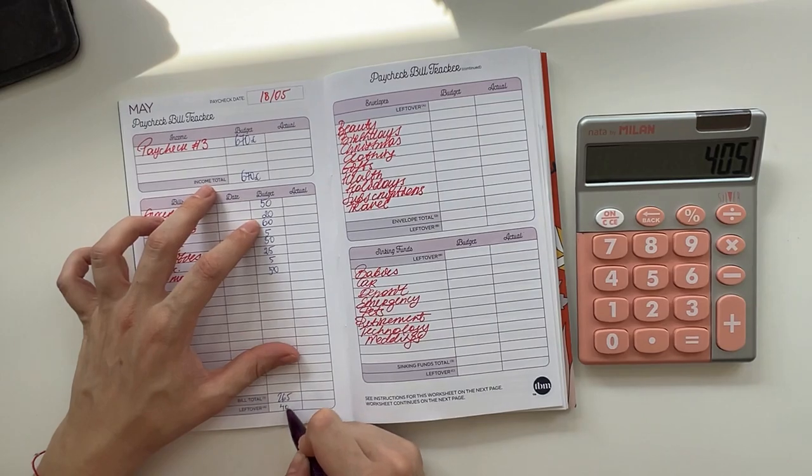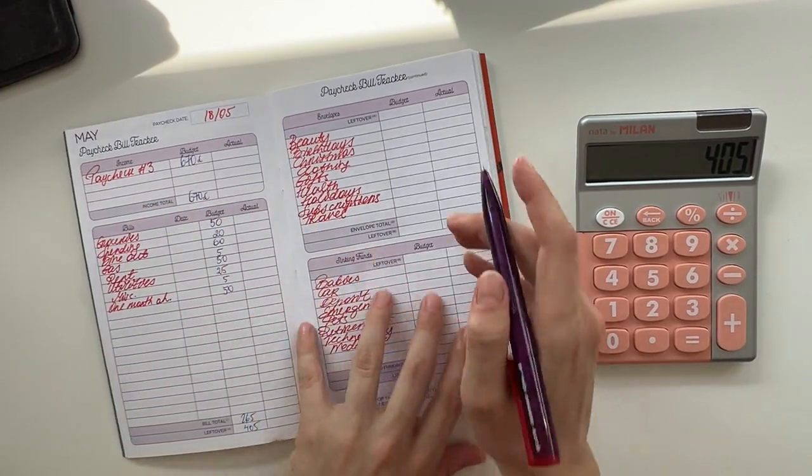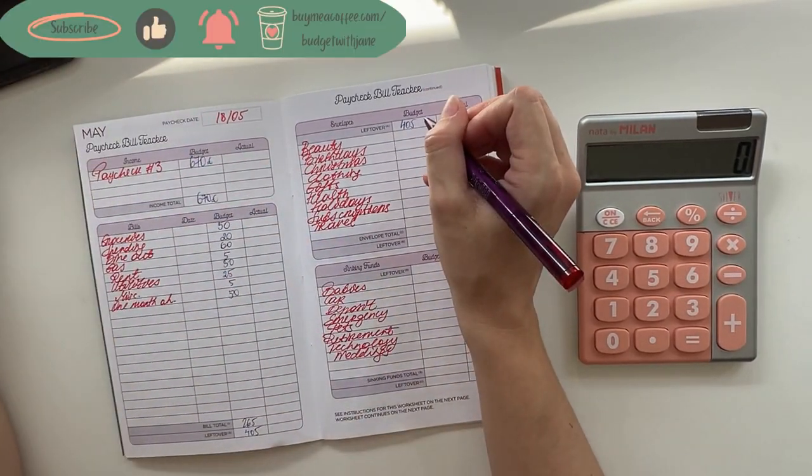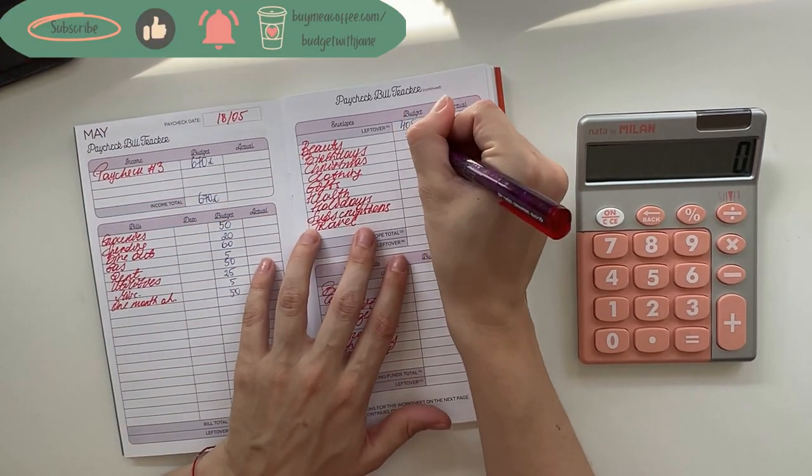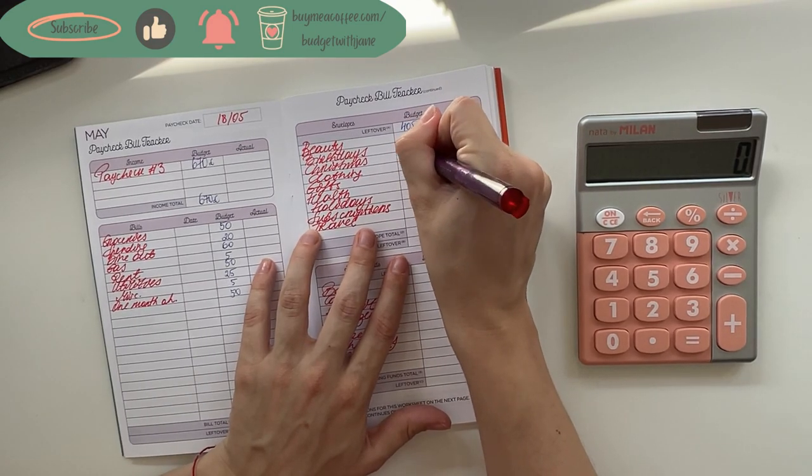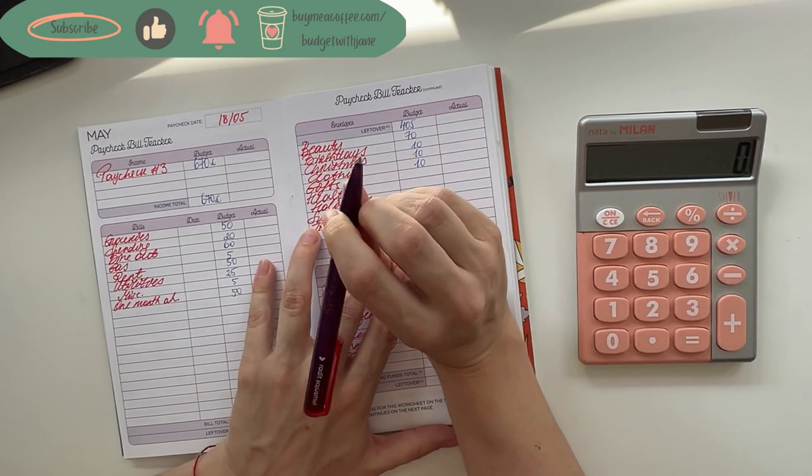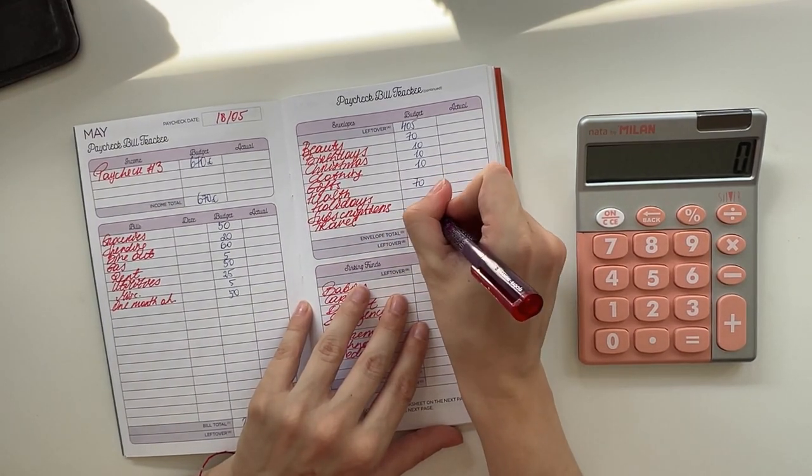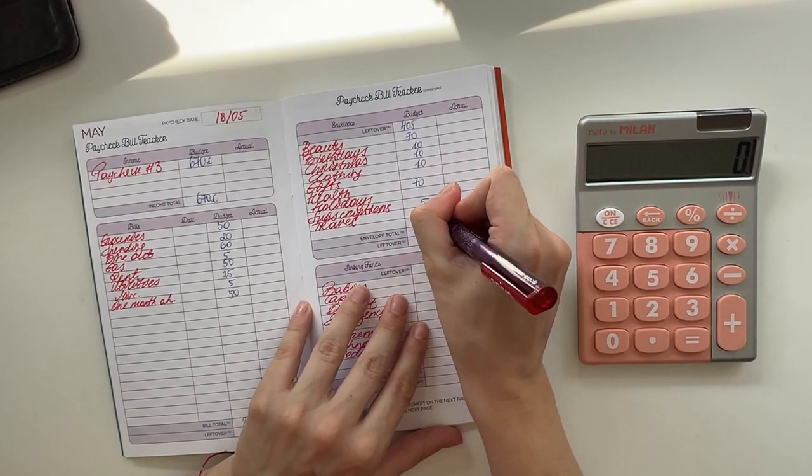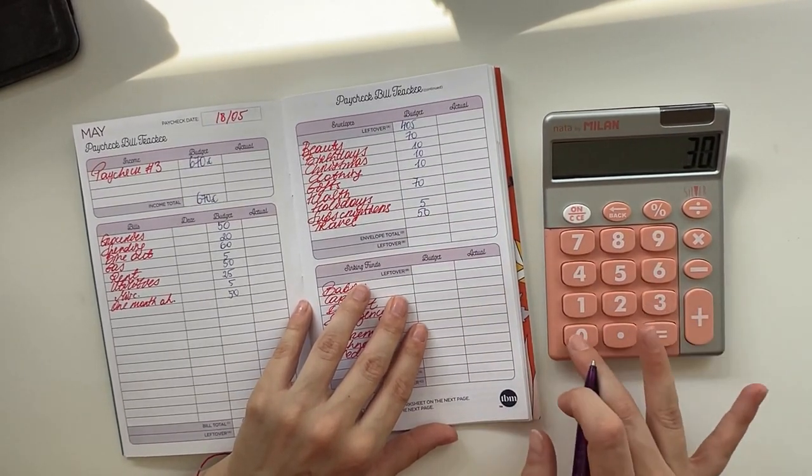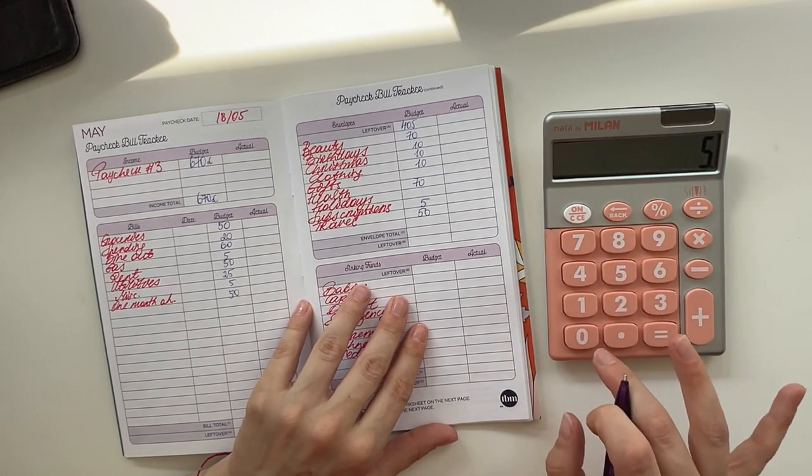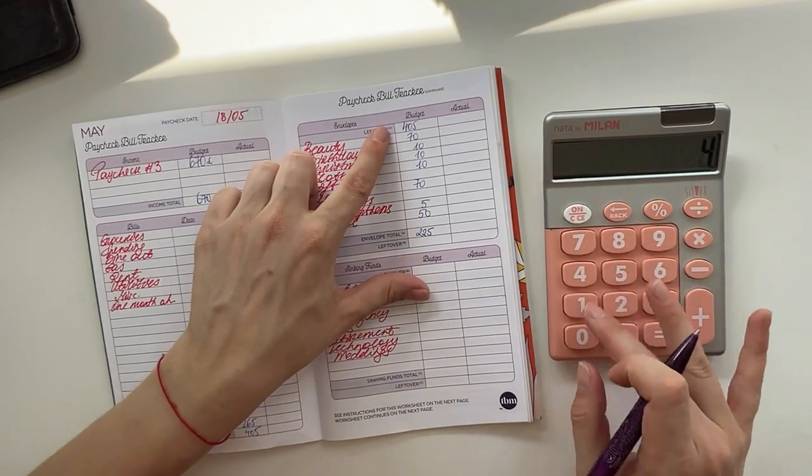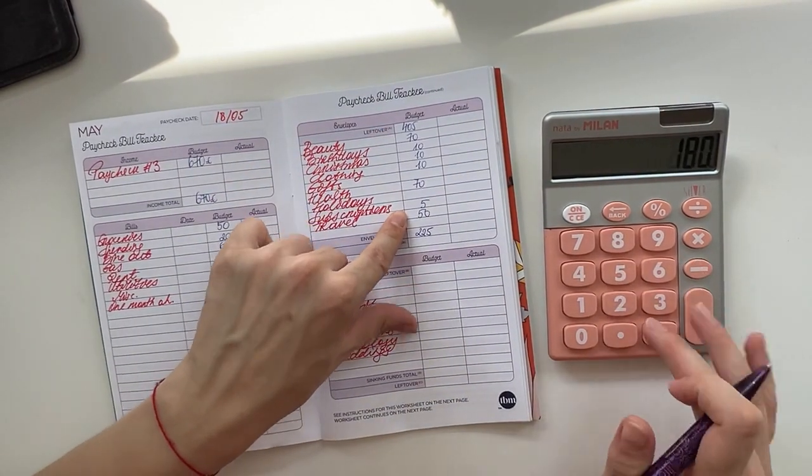We're bringing that to short-term sinking funds. Beauty is going to get 70, birthdays, Christmas and clothing each is going to get 10, then health is also going to get 70, holidays isn't going to get anything, subscriptions is going to get 5, and travel 50. In total that is going to be 225 in short-term sinking funds, so 405 minus 225 is 180.